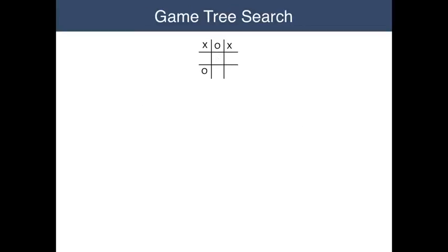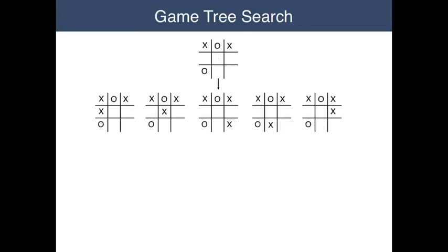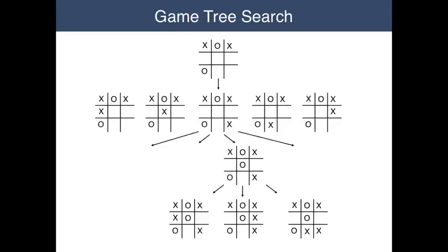Repeating this, a player can expand the tree to two levels, three levels, and so forth, until it encounters the terminal states on every branch, such as the one shown here in the middle of the bottom row. By examining the various branches, you can choose the one that produces the best payoff.